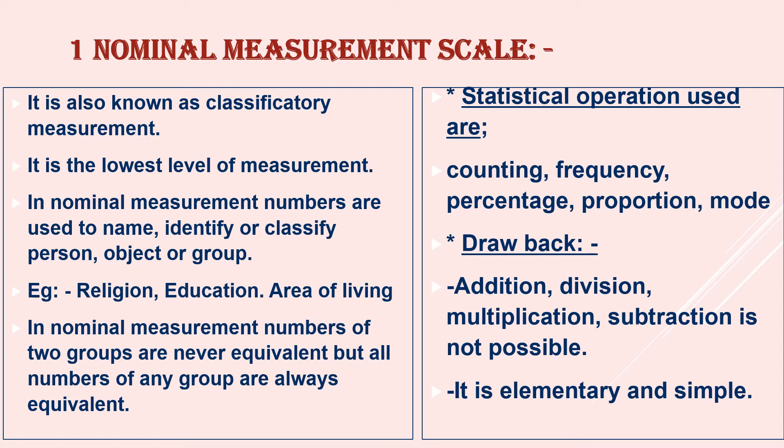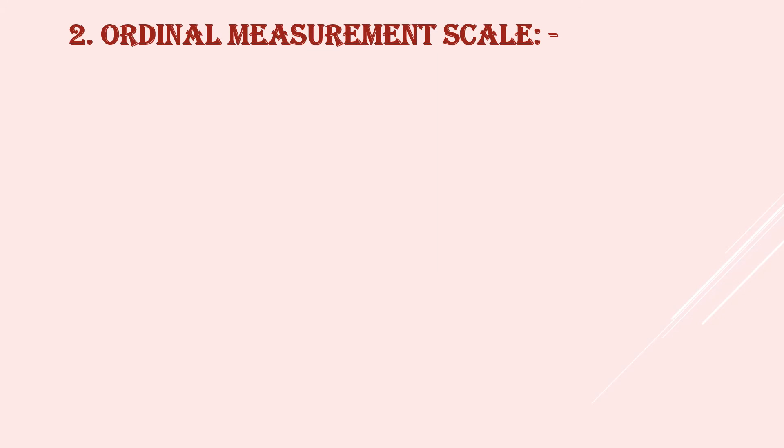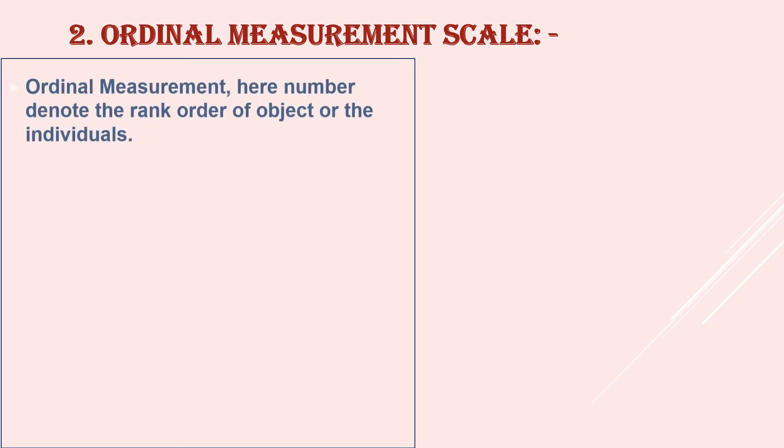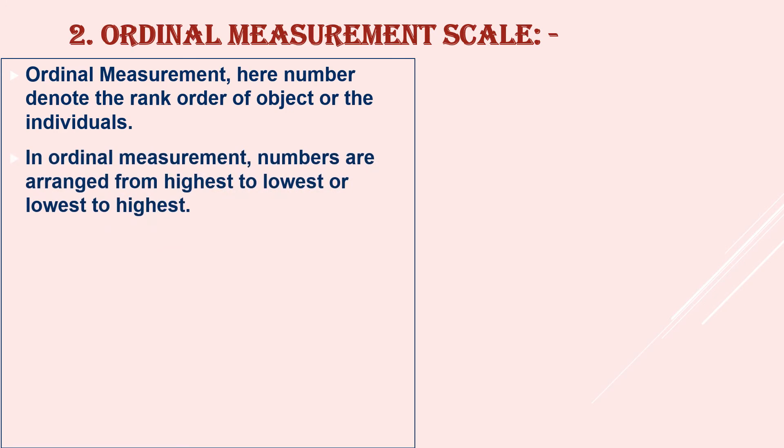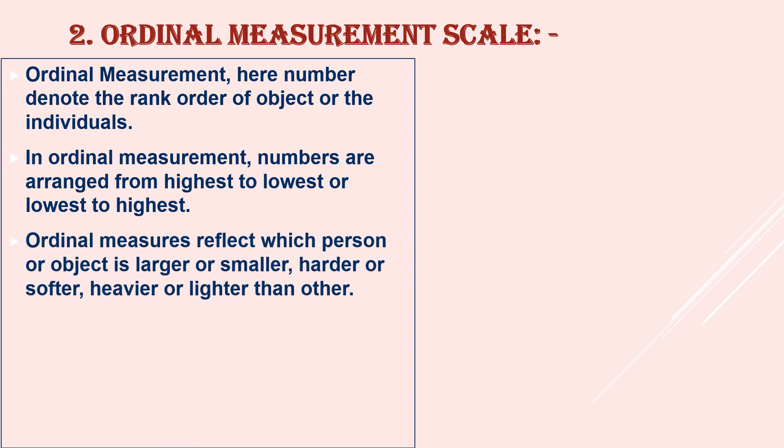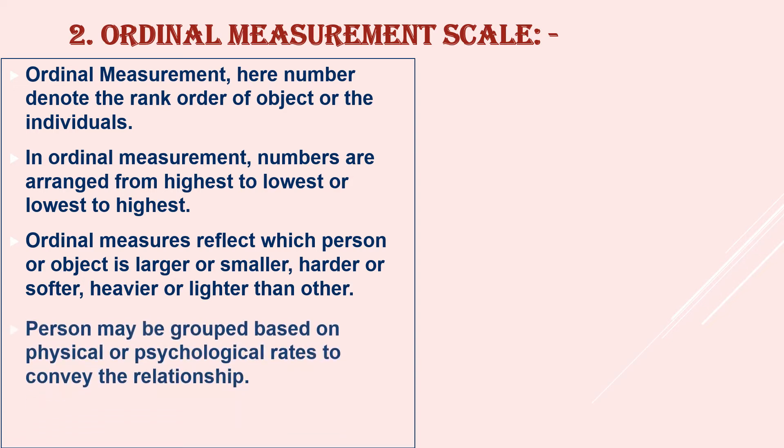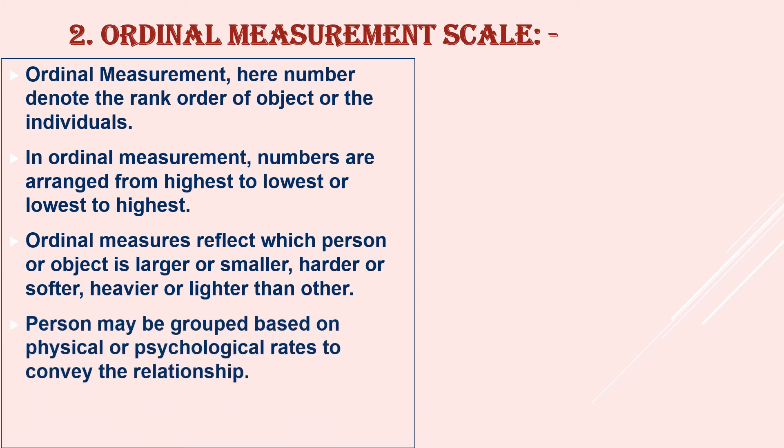And it is elementary and simple measurement scale. The second one is ordinal measurement scale. Ordinal measurement - here number denote the rank order of the object or the individual. In ordinal measurement, numbers are arranged from highest to lowest or lowest to highest. Ordinal measures reflect which person or object is larger or smaller, harder or softer, heavier or lighter than other.